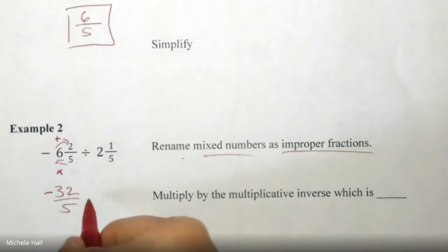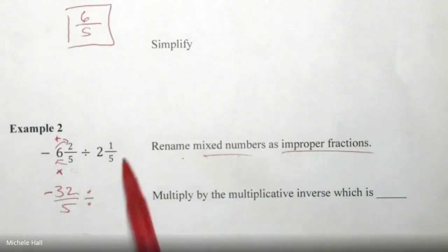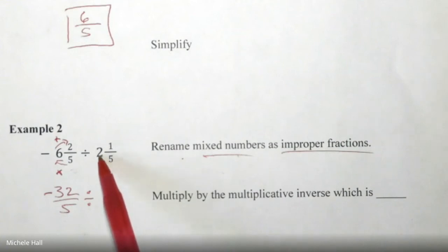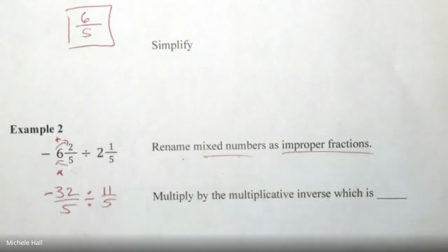And we're still dividing, right? Now change the next mixed number to an improper fraction. Five times two is ten, plus one is eleven fifths. I've done the first step: change the mixed numbers into improper fractions.